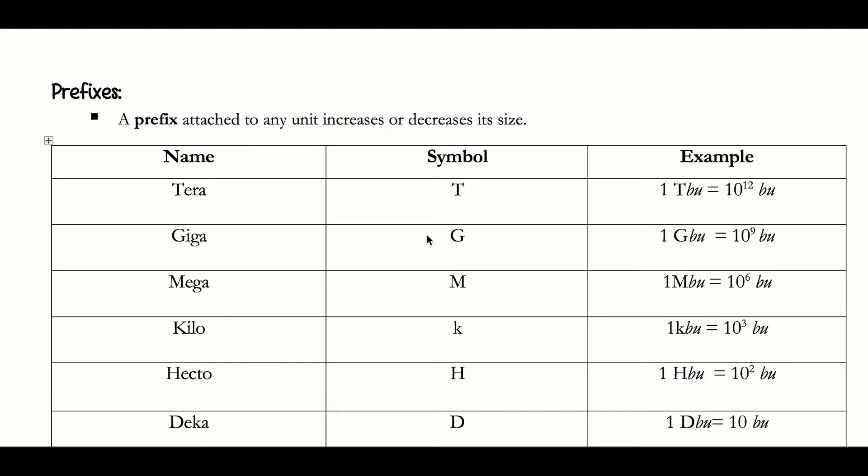We just talked in the previous lesson about measurements and the accuracy of measurements. This lesson is going to enable us to convert between different units of measurement. For example, common units for volume include liters, milliliters, quarts, pints, and gallons. For length: miles, kilometers, centimeters, millimeters. For time: seconds and hours. For mass: kilograms, grams, or tons. I'm going to show you the proper procedure for how to convert between different units of a type of measurement.